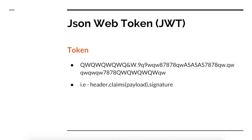In order to create a token, the steps are pretty straightforward. First, you create a header — the header component of the JWT contains information about how the JWT signature should be computed. Then you create a payload — the payload component of the JWT is the data stored inside the JWT, which is your claim object. The signature is computed as follows: take the header and apply base64 URL encoding, take the payload and apply base64 URL encoding, append both of them, hash that data, and then base64 URL encode the hash to produce your signature.